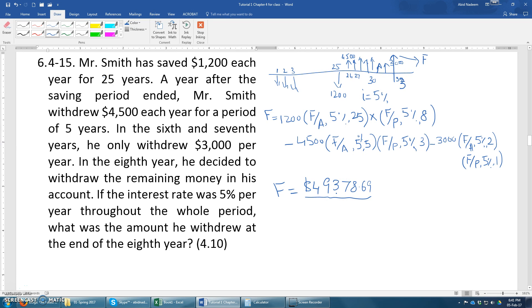So therefore in this case we can determine that the final withdrawal amount, final lump sum withdrawal amount, will be this value: $49,378.69. So in fact you may also get this answer $49,378.69.